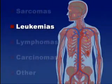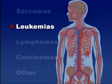Leukemias are cancers of the blood cells, arising in the blood-forming organs, bone marrow, and the spleen.